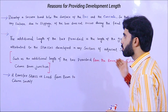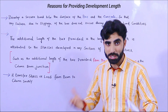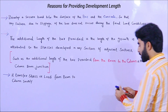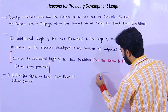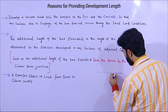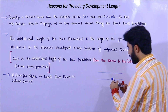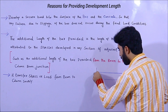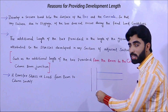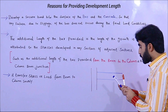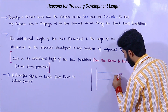The first reason for providing development length in a beam — but first, if you don't know what development length is, let me draw a diagram. Suppose this is a beam and here this is a column. Horizontal is the beam, vertical is the column.